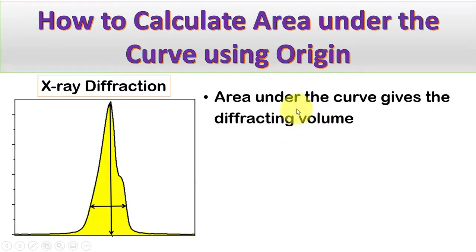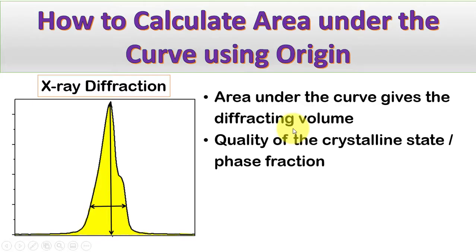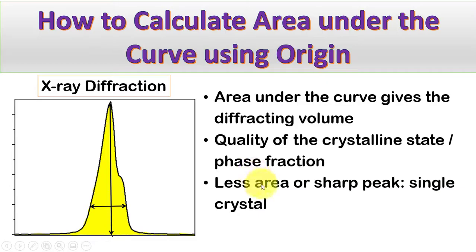As I know, the area under the curve will give me the total diffraction volume. And it gives, in other words, the quality of the crystalline state, which we call a space fraction. Less area or sharp peak will indicate single crystallinity, and the wider peak will be an indication of a polycrystalline state.